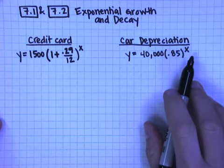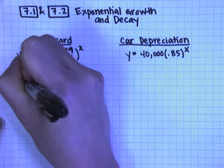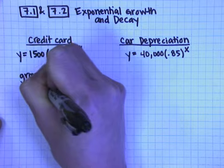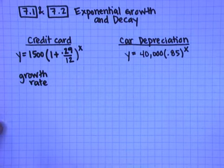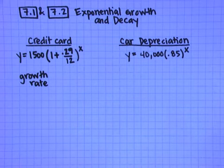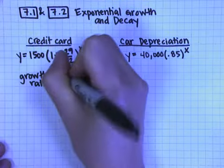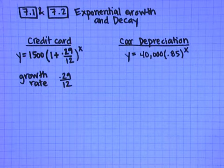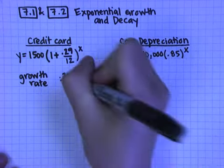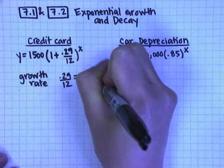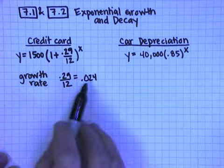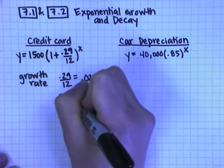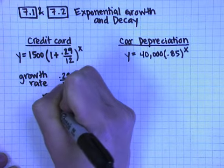There's some vocabulary words that we need to learn. One is the growth rate. The growth rate, or the rate of decay for a problem that's decay, is the percentage that you're going up or going down by each time. So for us, it's that 0.29 divided by 12, which is 0.024. Now, the growth rate we usually say is a percent, and so what you would say in this problem is it's 2.4%. And we usually use the variable r for the growth rate.